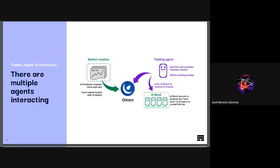As a recap on how the trader agent works: we have the OMEN markets that are opened periodically. The trading agent monitors these markets and uses the AI MEC, which is another autonomous service, to request predictions. The MECs execute the AI task, make the prediction, and produce an output that the trading agent digests and decides if it's going to place a bet or not for a given market.